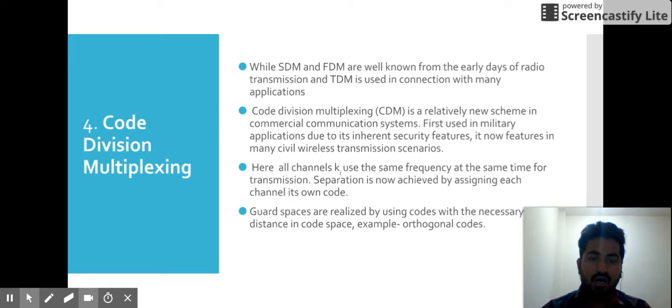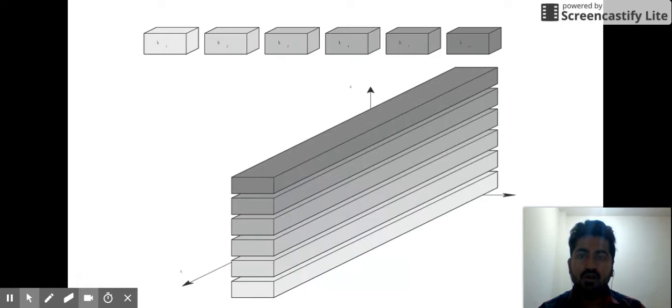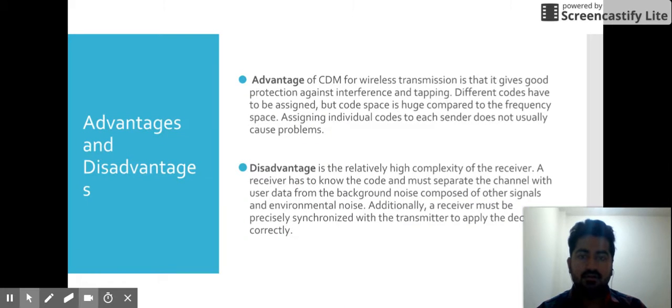What are advantages and disadvantages of CDM? Advantages of CDM for wireless transmission is that it gives good protection against interference and tapping. Different codes have to be assigned, but code space is used compared to frequency space. Assigning individual codes to each sender does not usually cause problems. We have different codes and so minimum interference takes place and utilization is high.